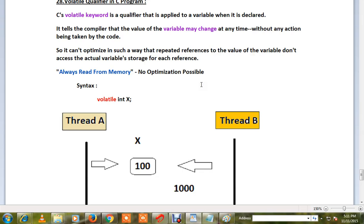C's volatile keyword is a qualifier that is applied to a variable when it is declared. It informs the compiler that the value of the variable may change at any time without any action being taken by the code. This is surprising - I didn't do anything in my code, but the value might change.